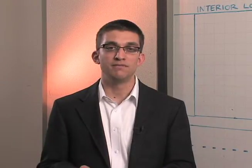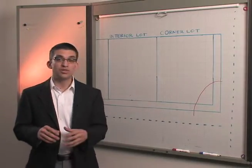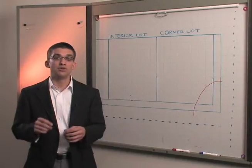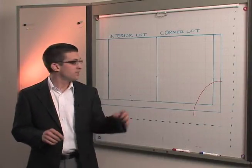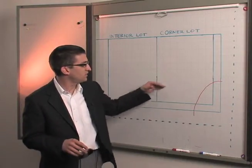The third question that we get is how tall can my fence be? That also has two different answers. The first is within your front property line, you could have up to a 3-foot fence. And that is anywhere within the first 15 feet of your property.